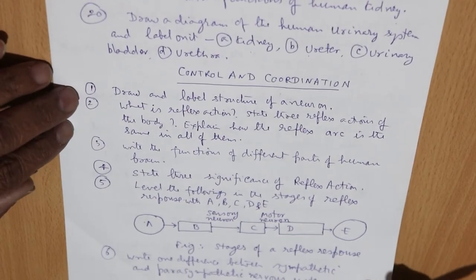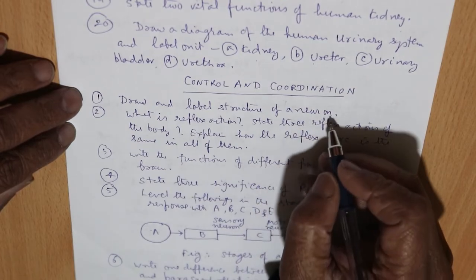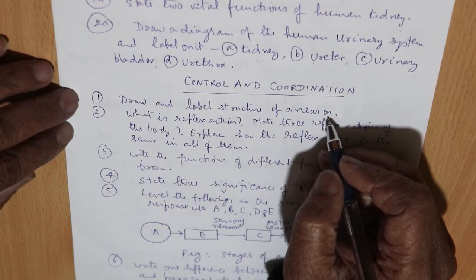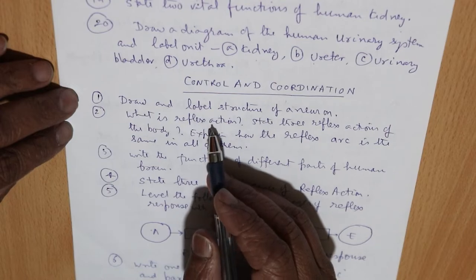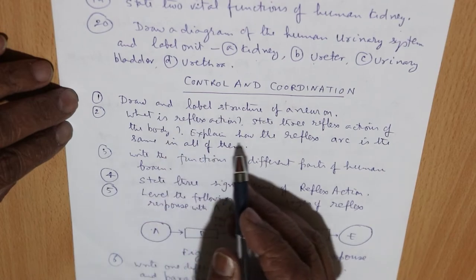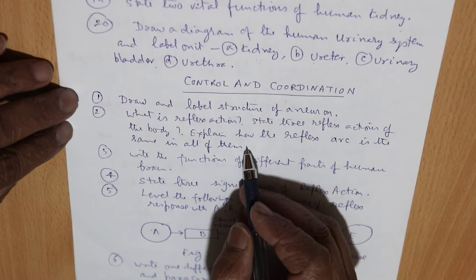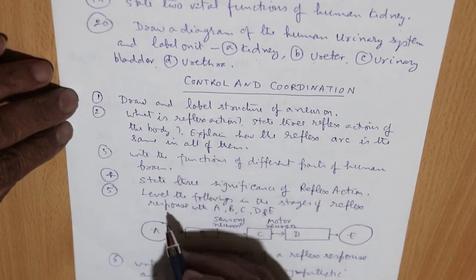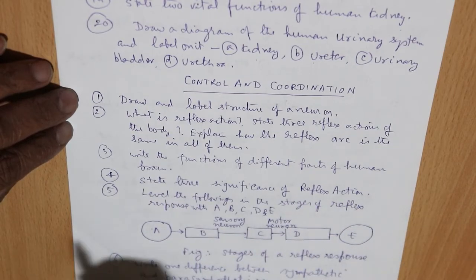We go to the control and coordination chapter. Draw and label the structure of a neuron — the structural and functional unit of the human nervous system. What is reflex action? State three reflex actions of the body and explain how the reflex arc is the same in all of them. Write the functions of different parts of the human brain. State three significances of reflex action.